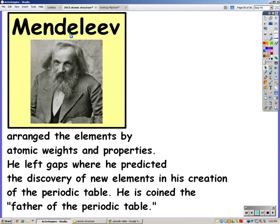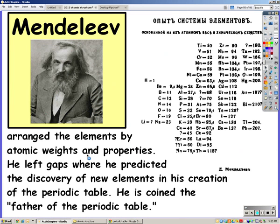Mendeleev arranged the elements by atomic weights and properties on the periodic table. He left gaps where he predicted the discovery of new elements, which is why he was coined the father of the periodic table. You can see his periodic table on the right.